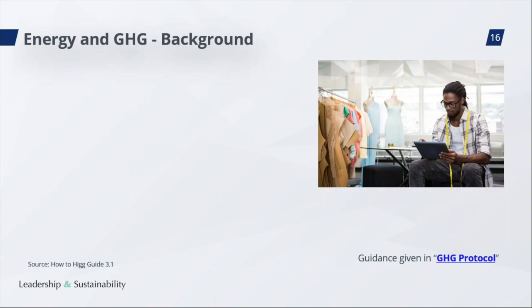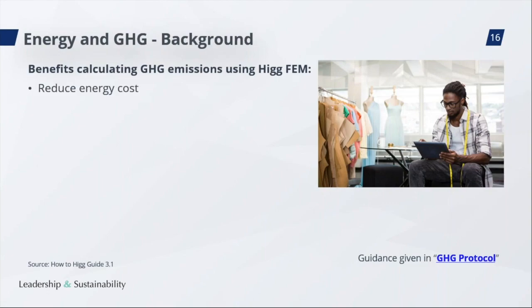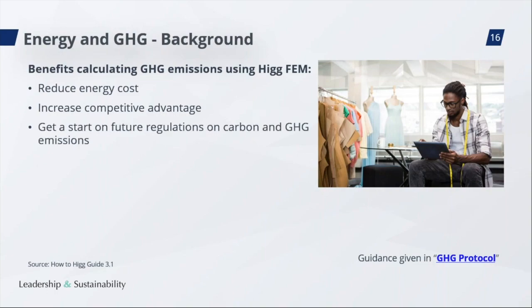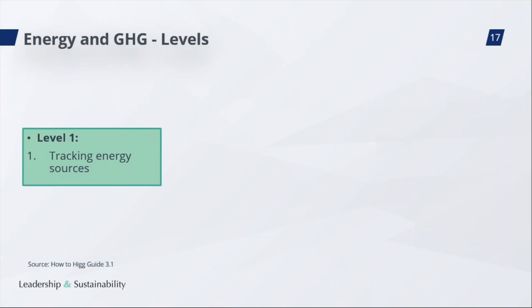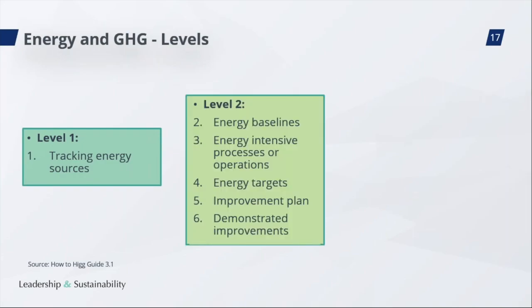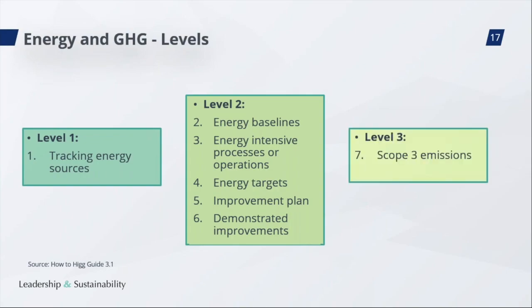Identifying and managing the source and amount of greenhouse gas emissions can benefit your factory in several ways: reducing energy costs – energy is one of the easiest ways to save costs; increasing competitive advantage; getting a head start on future regulations on carbon and greenhouse gas emissions; and environmental stewardship – managing environmental resources well. The energy and greenhouse gas section has three levels. At level 1, it's only about tracking your energy sources. At level 2, there are questions on baselines, targets, improvement plans, and improvements. At level 3, there is one question regarding Scope 3 emissions.